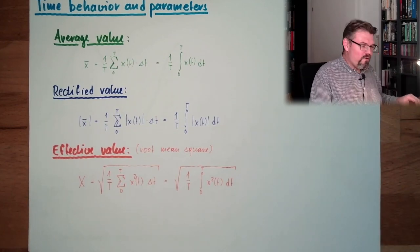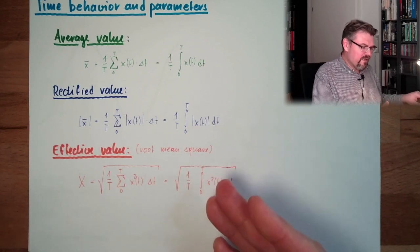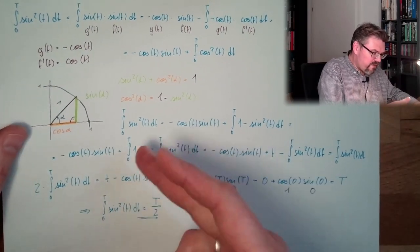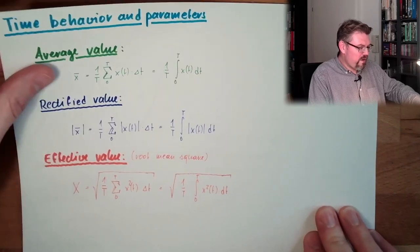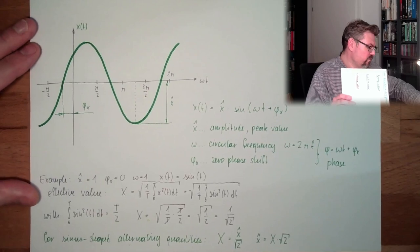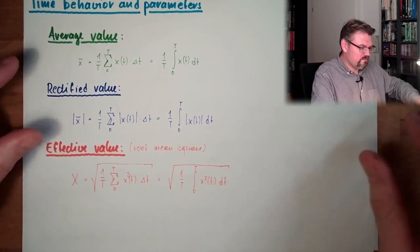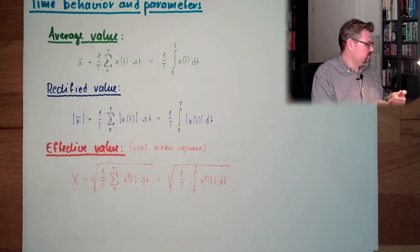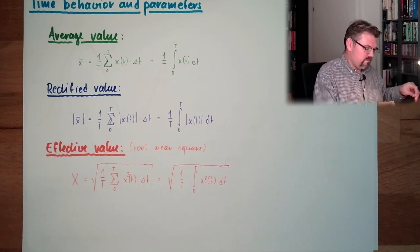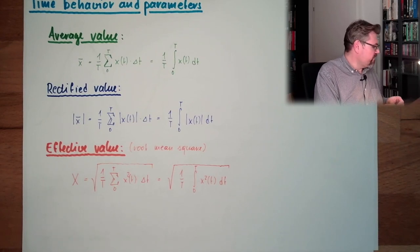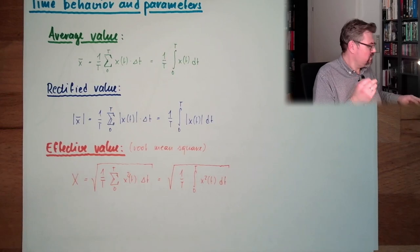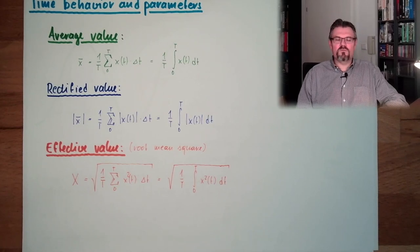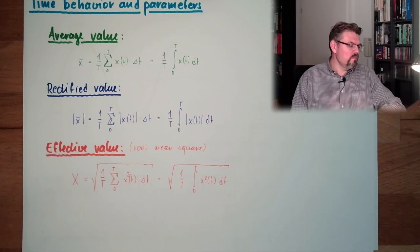This relationship — effective value equals amplitude divided by square root of 2 — is valid only for sine functions, because it comes directly from integrating sine squared. If we have functions other than sine waves, we cannot use square root of 2. It's important to know this, because you often hear 'divide by square root of 2,' but that's only for sine waves and only for alternating quantities. If it's a pulsating quantity, also not.